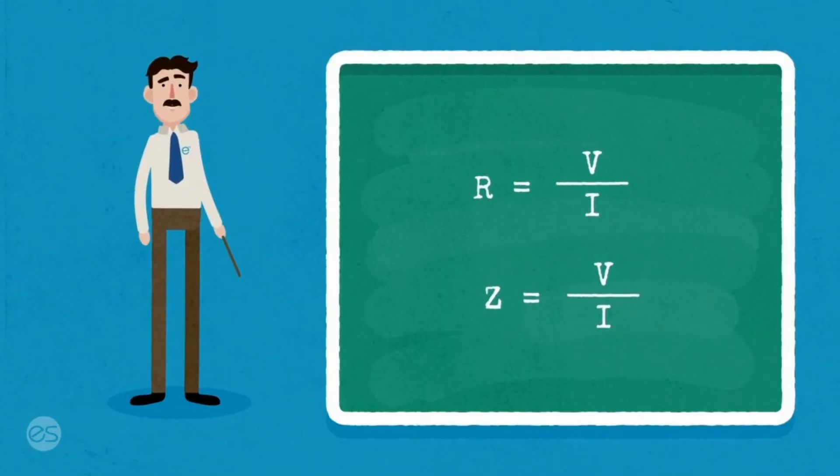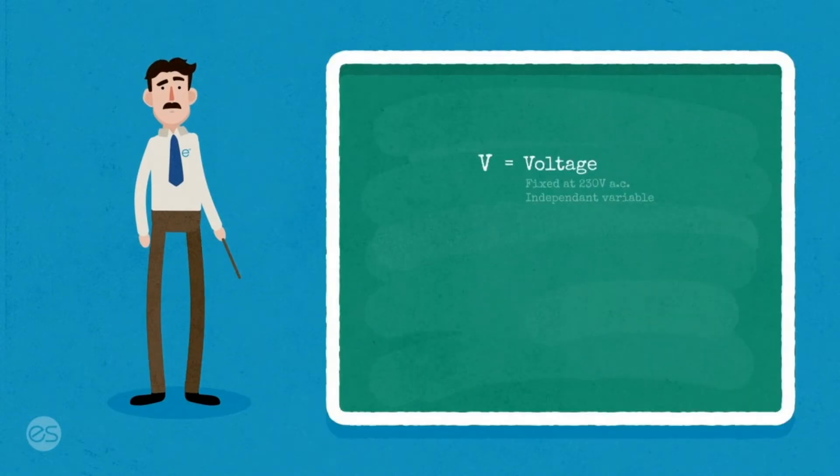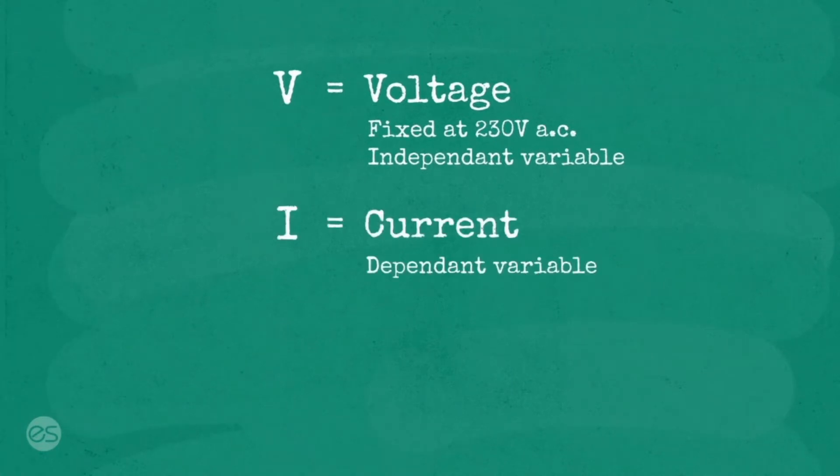There are some things out of our control. Voltage is fixed by the supply authority at 230 volts AC. Current is variable, dependent on the load.